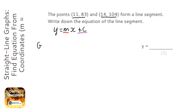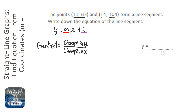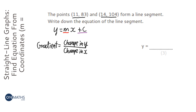We're going to find m first — the gradient. The formula for the gradient is the change in y over the change in x: how much did y change between the two coordinates divided by how much x changed. It's really common to get these mixed up because you're told from a very young age to always put x before y, but in this formula y comes before x. So just remember this is the weird one.